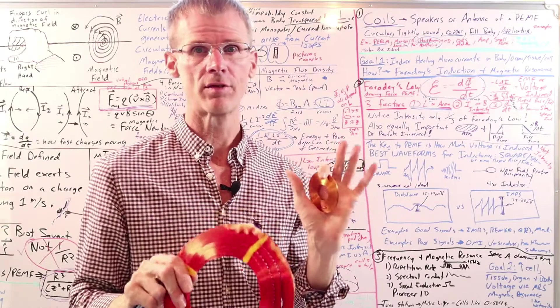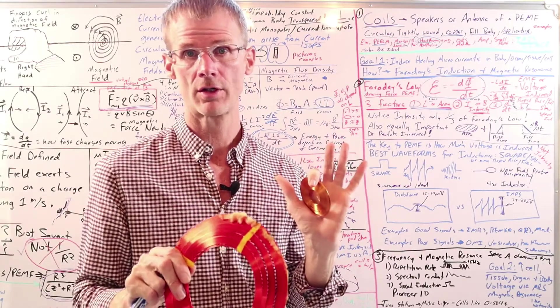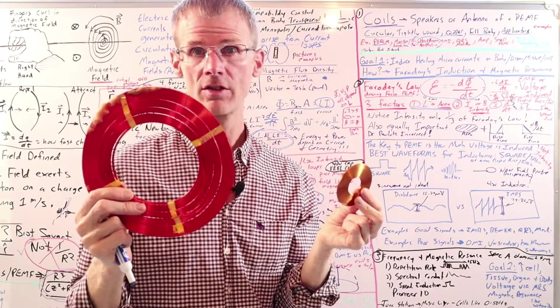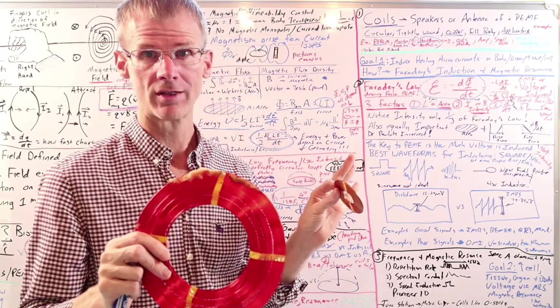So a sine wave is an example of a signal that will not induce much current. So let me give you an example. The bio balance uses modulated sine waves versus say the IMRS sawtooth. Now I'm going to show you an image here on my oscilloscope.